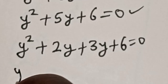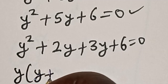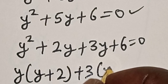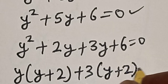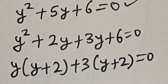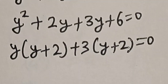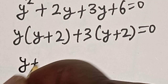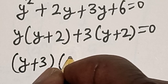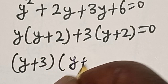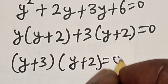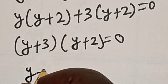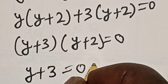Then this is y into (y plus 2) plus 3 into (y plus 2) is equal to 0. Then we have (y plus 3) multiplied by (y plus 2) is equal to 0. So there are two cases here: y plus 3 is equal to 0.